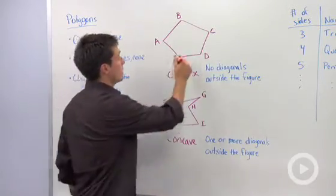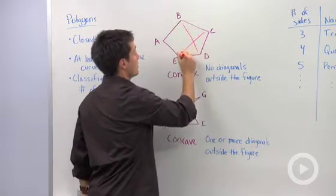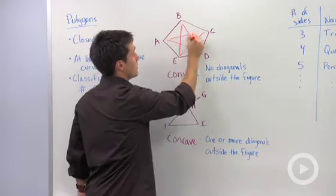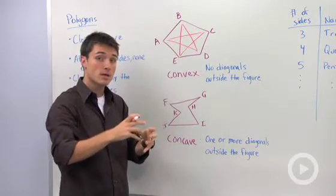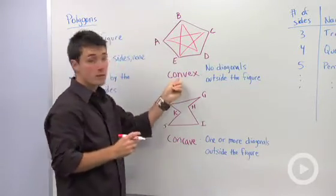So in this polygon, if I drew in my diagonals, I drew them all in, you notice that all of those diagonals are contained within that polygon. So it would be considered convex.